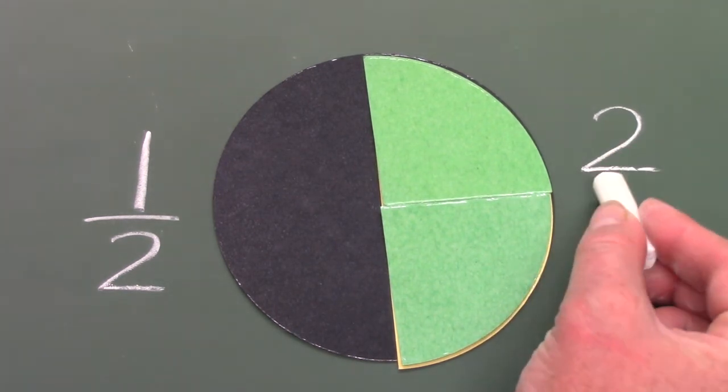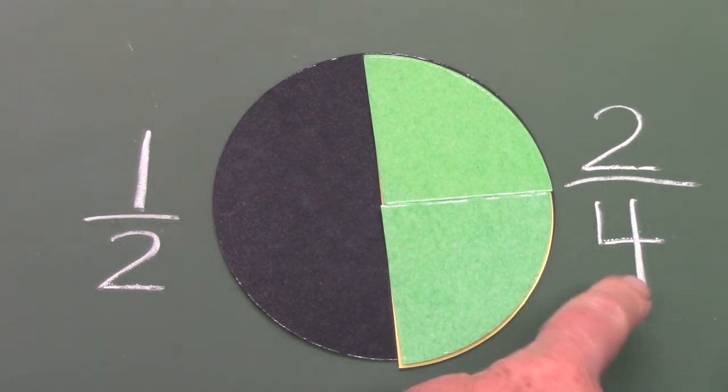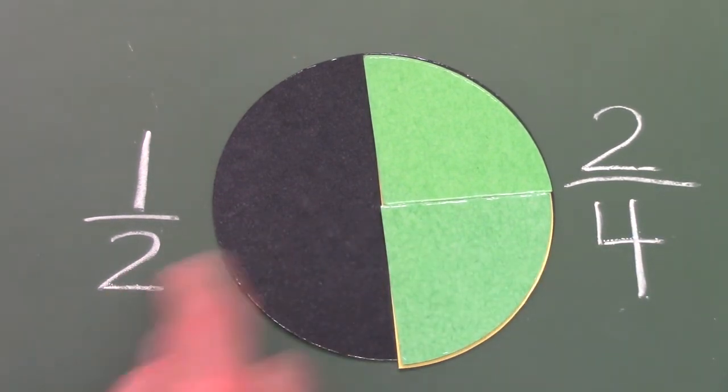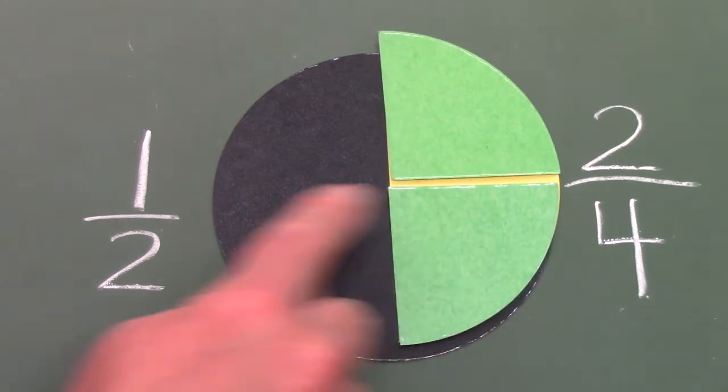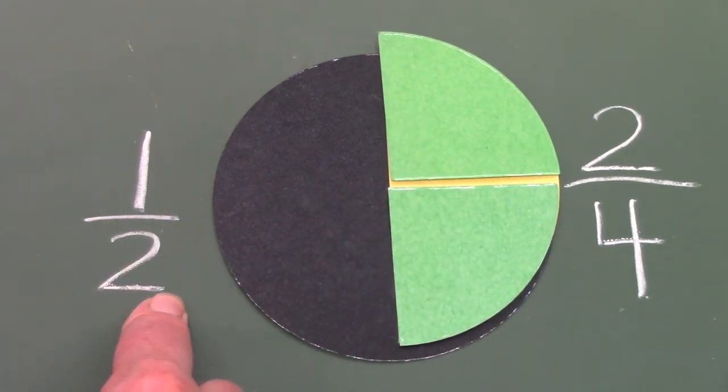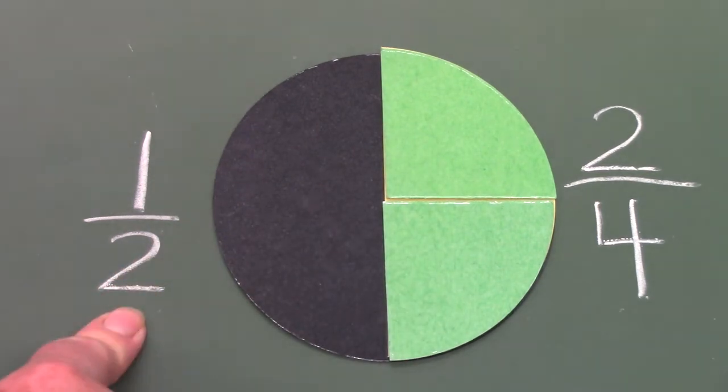I have two out of the four pieces. And that is the same amount or it covers the same area as one-half. Two-fourths and one-half look like the same amount.